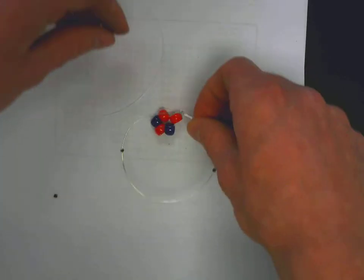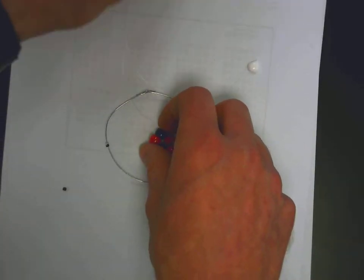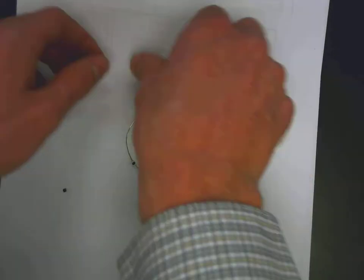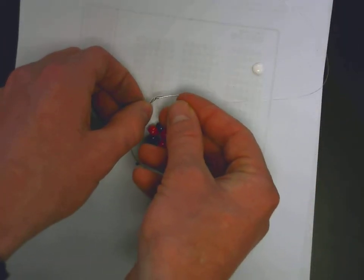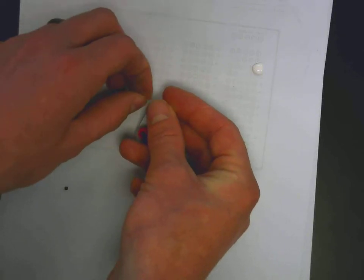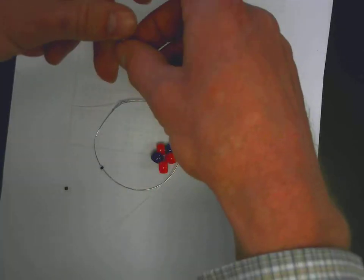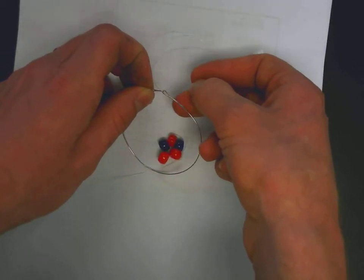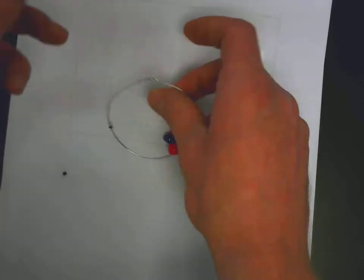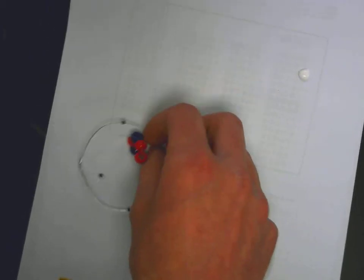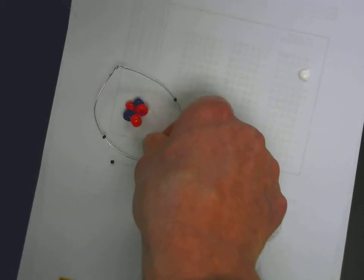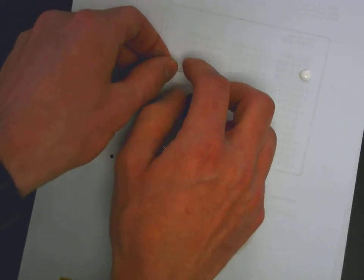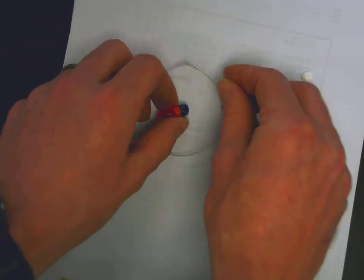Now you need to string together the wire loops and the nucleus. So you take your fishing line one more time and run it through. Run it through the loops a couple of times, and try to get it so it's evened out. Then tie a knot so the nucleus is in the middle.